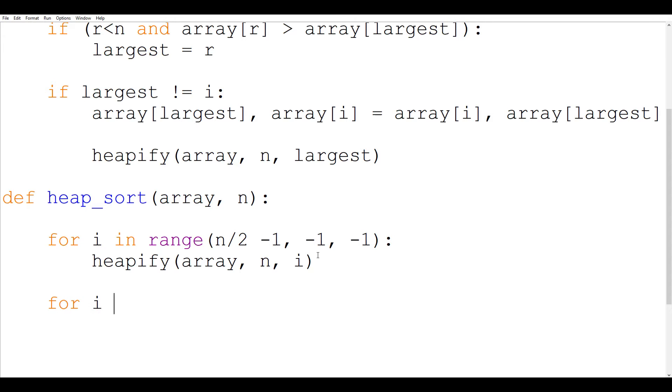And after building a max heap we are going to again include a for loop to swap the first and the last elements. So in this case we are going to iterate from n minus 1 to 0 and minus 1 is again going to be our step because we are going from the end to the start.